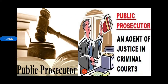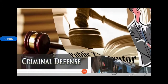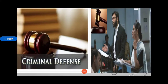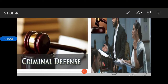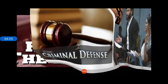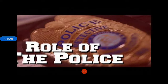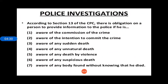Now let us have a slideshow of all four key players. The public prosecutor is an agent or officer of the state government in the criminal courts. Then we have the defense lawyer, who defends the accused person in proving that this person has not committed the crime and is innocent. We are now reading the role of the police.